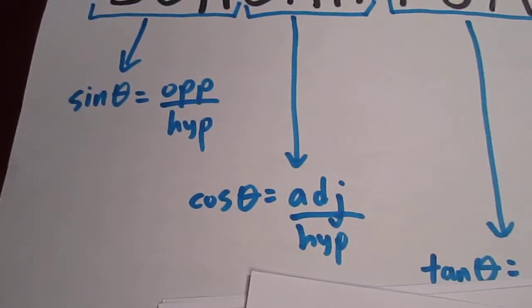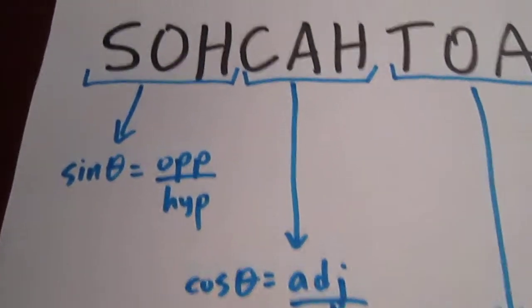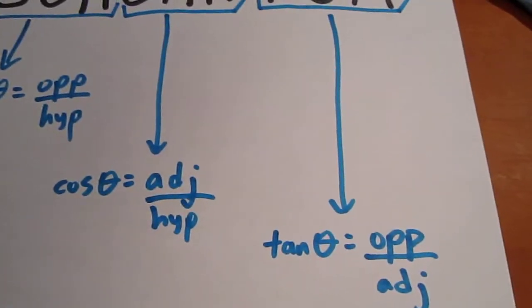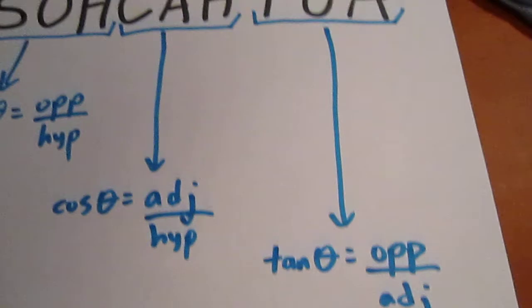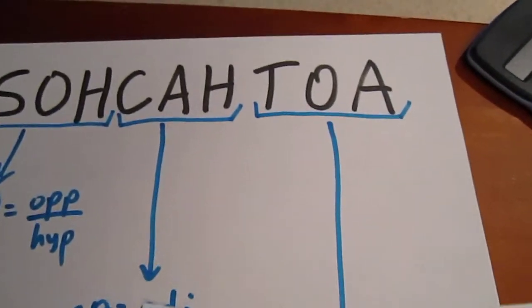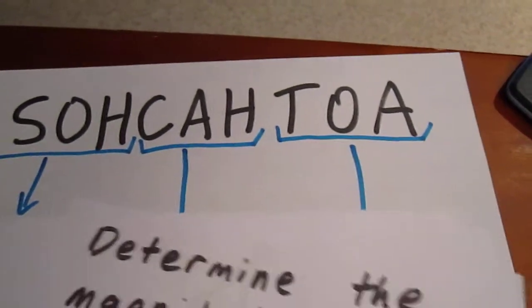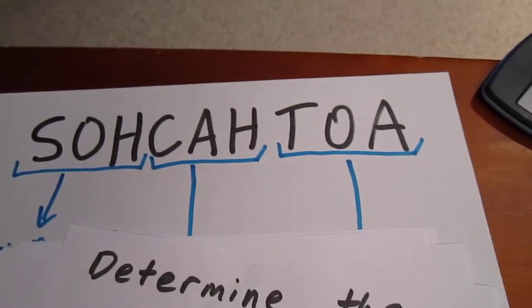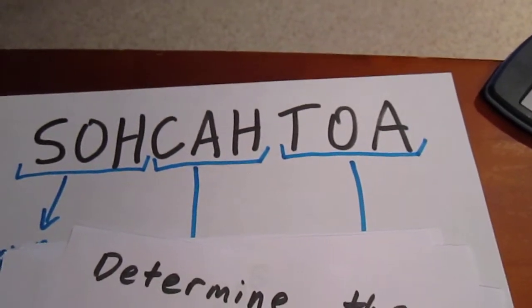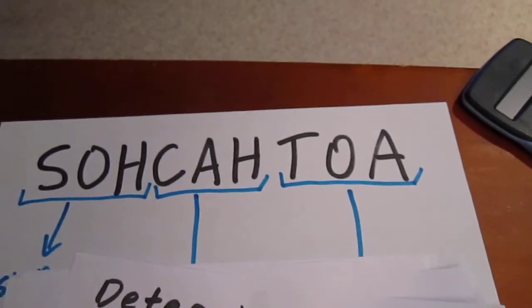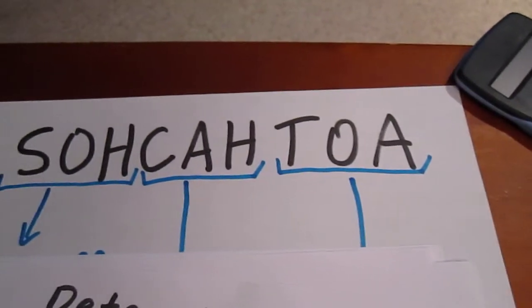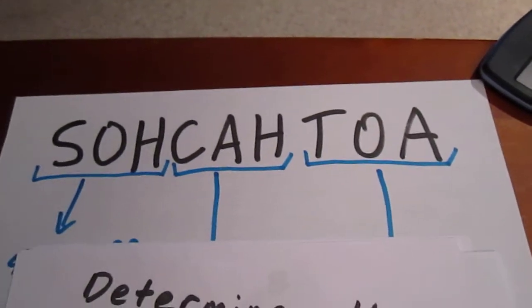It tells us that the cosine of an angle is equal to the adjacent over the hypotenuse — that's what CAH stands for. And it tells us that the tan of an angle is equal to opposite over adjacent — that's what TOA stands for. This is only true in cases where there is a 90 degree angle in the relevant triangle. It's also important in each one of these cases to first identify the hypotenuse.